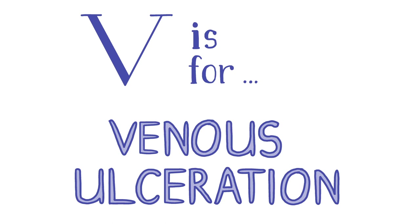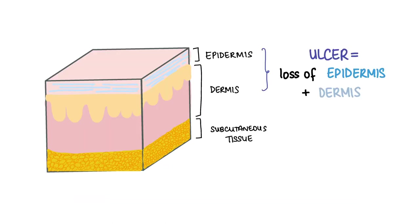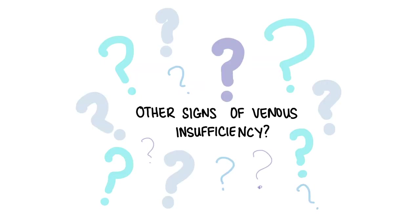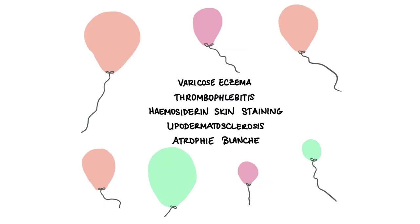V is for venous ulceration. An ulcer is defined as a loss of the epidermis and dermis. A venous ulcer is shallow and has a granulated base, commonly seen in the gaiter region — the area of the lower limb between the mid-calf and the ankle. It's associated with pain especially at the end of the day, and symptoms of chronic venous insufficiency like aching, pruritus and a bursting sensation. Other signs of venous insufficiency include varicose eczema, thrombophlebitis, haemosiderin skin staining, lipodermatosclerosis and atrophie blanche.